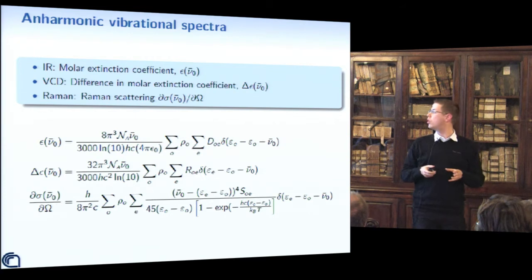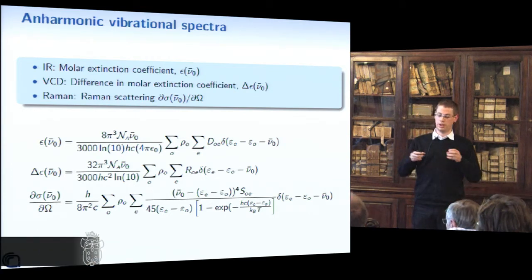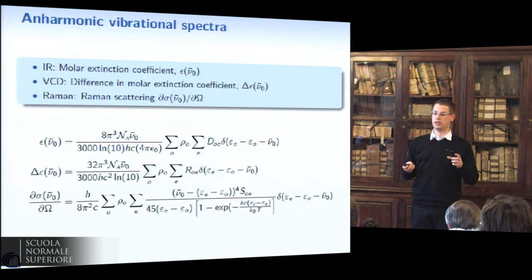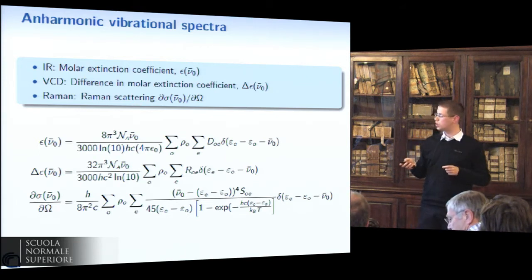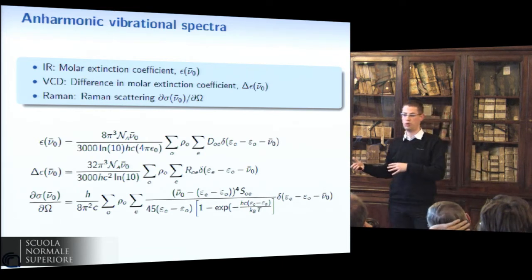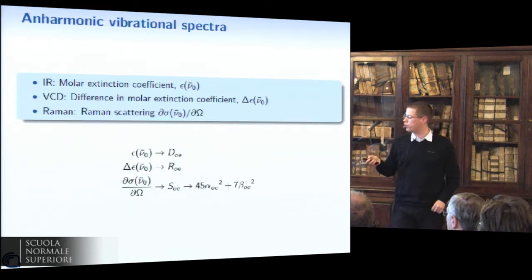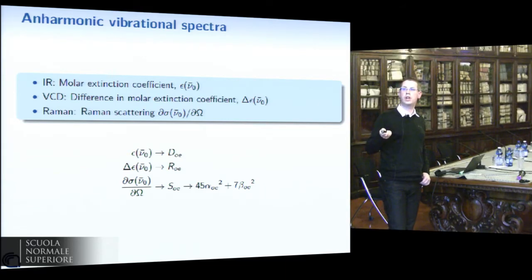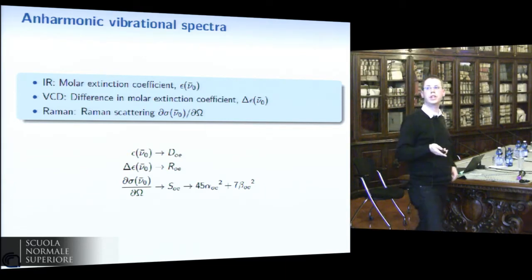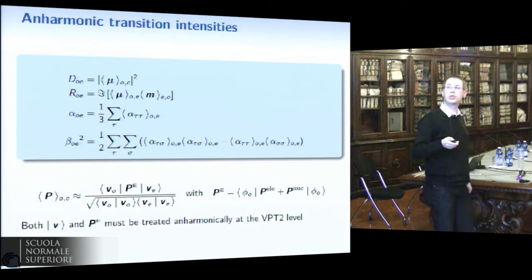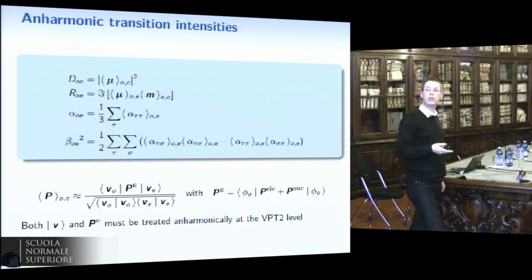What I have been working on more directly is the calculation of intensities, because for overtones and combinations the harmonic intensity vanishes. We focused on infrared, vibrational circular dichroism, and Raman spectroscopy. At the harmonic level we need to compute: for infrared the dipole strength, for VCD the rotatory strength, and for Raman the activity. This means computing the harmonic transition integral of three properties: the electric dipole, the magnetic dipole, and the polarizability tensor.